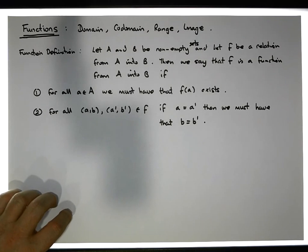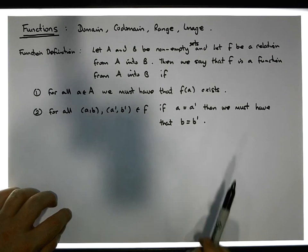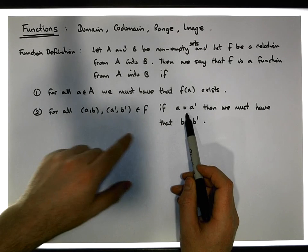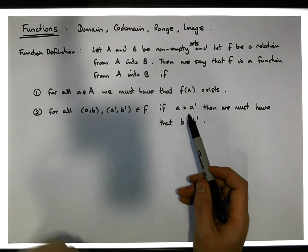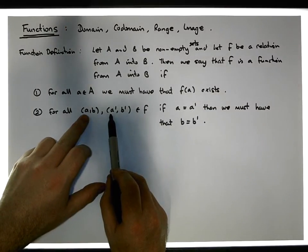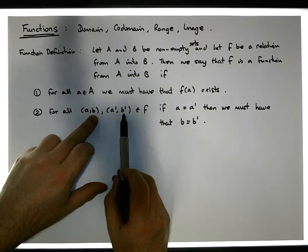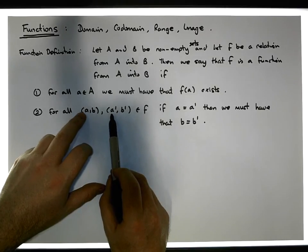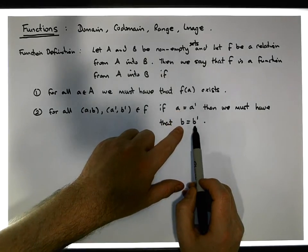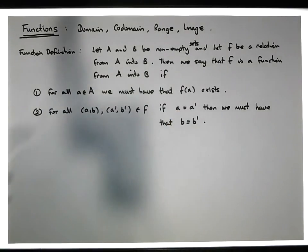Really what that's saying to us is that we can't have a situation where the same value is mapped to two different values. If we have the same value being mapped, and it's mapped to two different values, that's not allowed. If we have the same values that are mapped, then they must be mapped to the same point. That's our second criteria for a function to be a function.